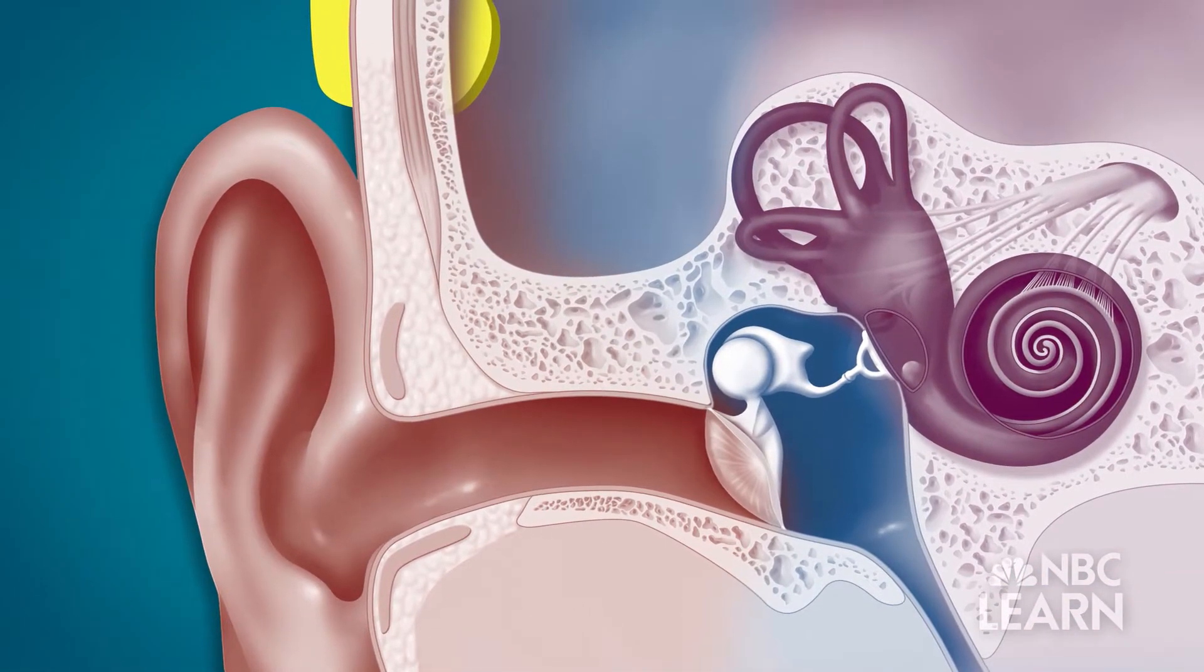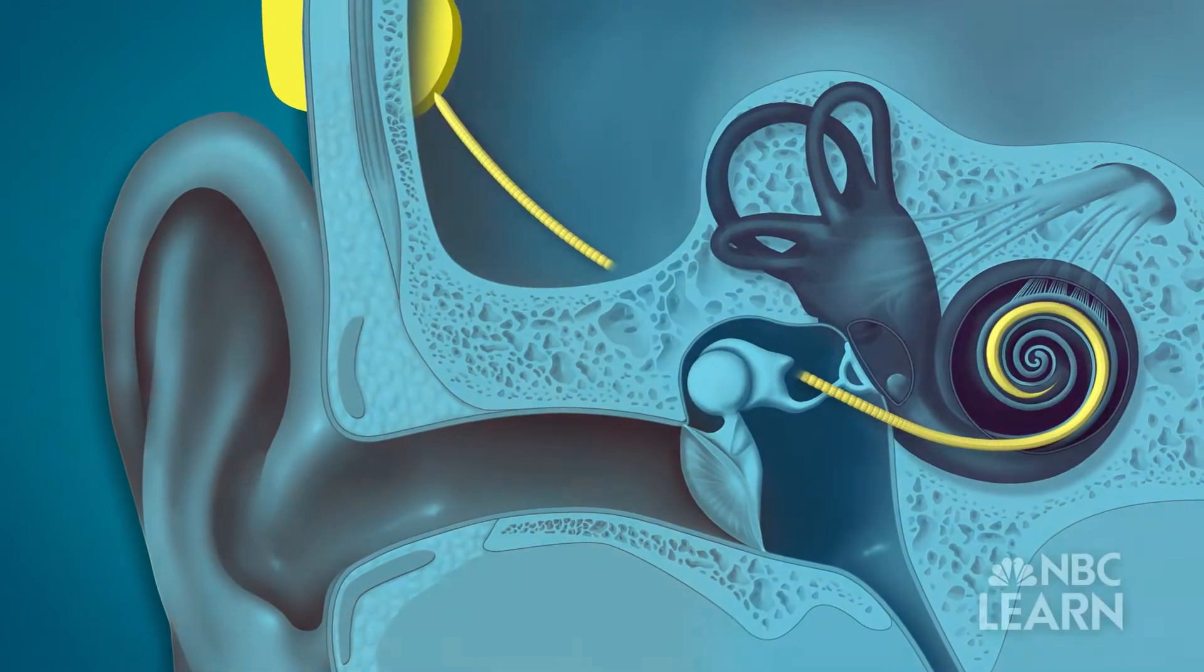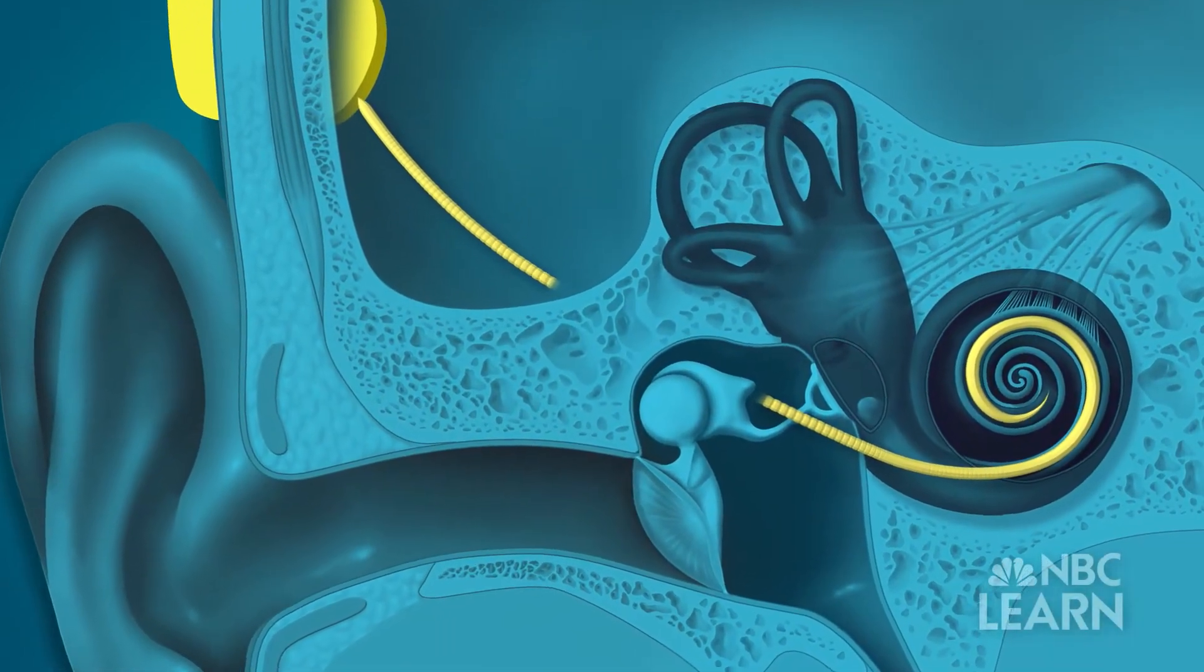What you can do with a cochlear implant is you replace the electrical information from the hair cells with electrical circuitry. So you have electrodes that now stimulate pathways that lead to the auditory nerve.